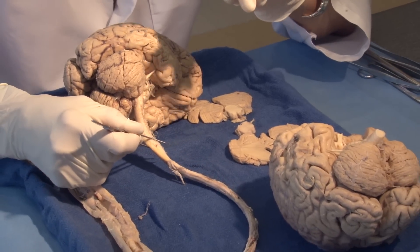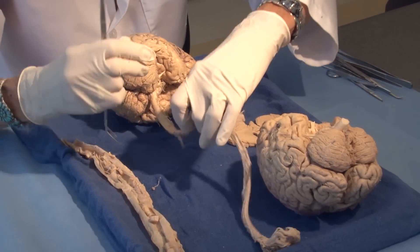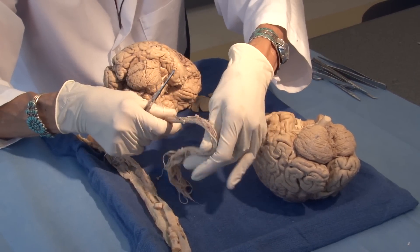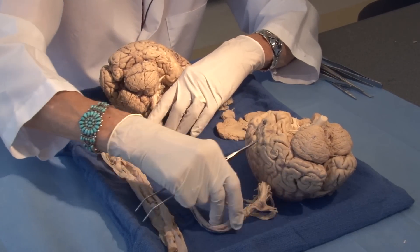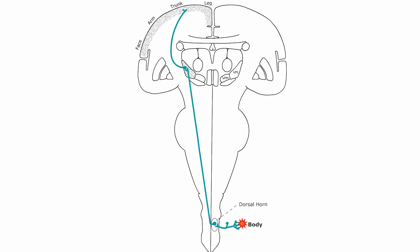So we have two somatic sensory pathways coming from the body, and there are comparable pathways coming from the trigeminal nerve, but we're just going to talk about the spinal cord contribution today. The spinothalamic or anterolateral pathway has three neurons. It is always the second neuron that decussates or crosses to the opposite side to ascend to the thalamus. The first neuron has its cell body in the dorsal root ganglion and synapses almost immediately in the spinal cord. The second neuron crosses to the opposite side and ascends through the brain stem to the ventral posterior lateral nucleus of the thalamus.